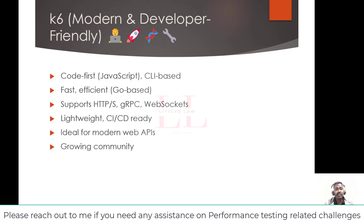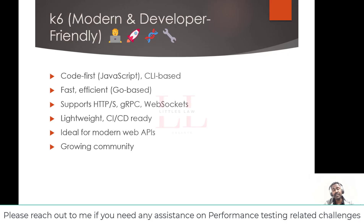K6 has a newer but rapidly growing community with active development, modern features, and strong integration with developer tools. For CI/CD integration, K6 is designed for it — its command-line, code-first nature makes it incredibly easy to automate and integrate into pipelines. It's very well suited for shift-left performance testing, where tests run early and often in the development process.